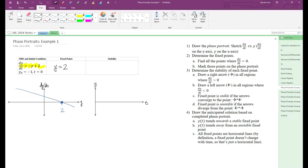In step 3, we determine the stability of the fixed point. We draw a right arrow in all regions where dy/dt is positive and a left arrow in all regions where dy/dt is negative. So from negative infinity to 2, we draw a right arrow because dy/dt is positive in that entire region.